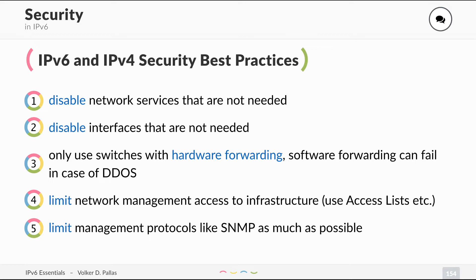Fourth, limit network management access to infrastructure. Use access lists, use an admin VLAN, and enable SSH on your devices only from specific networks. Do not enable SSH on your router to the whole internet. Also limit network management protocols such as SNMP as much as possible.